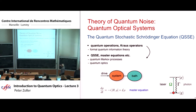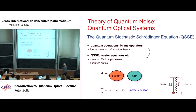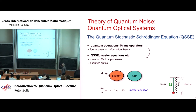If you open books on quantum information theory, there are things about quantum operations — what Nielsen and Chuang call Kraus operators and POVMs — this formal quantum information language. I would like to take this as a starting point and make a connection to what we do in quantum optics. I want to derive the quantum stochastic Schrödinger equation — quantum is important here, this is not the ordinary stochastic Schrödinger equation — and from there derive what we know in quantum optics, like the master equation.